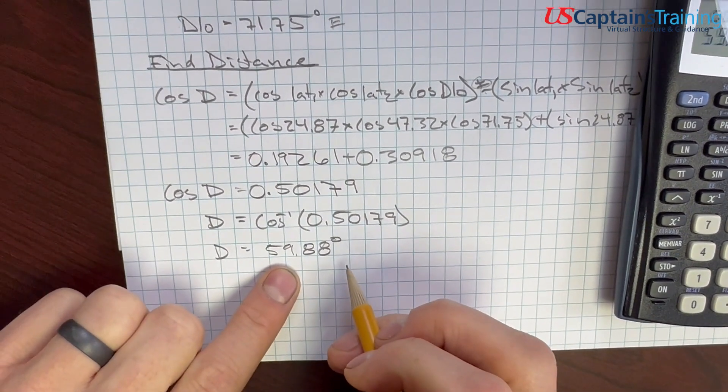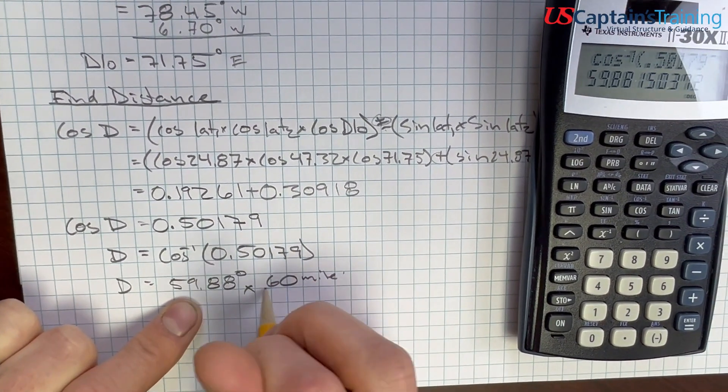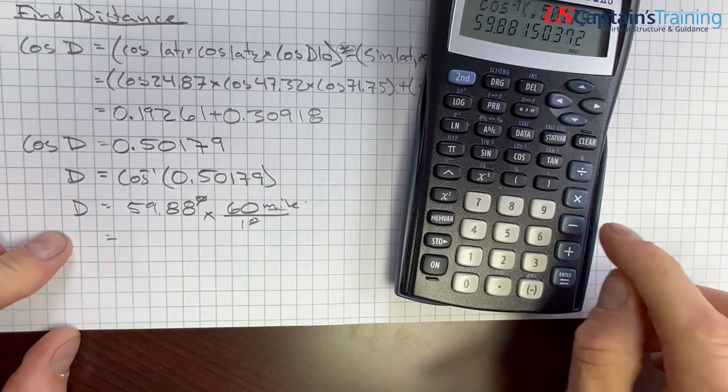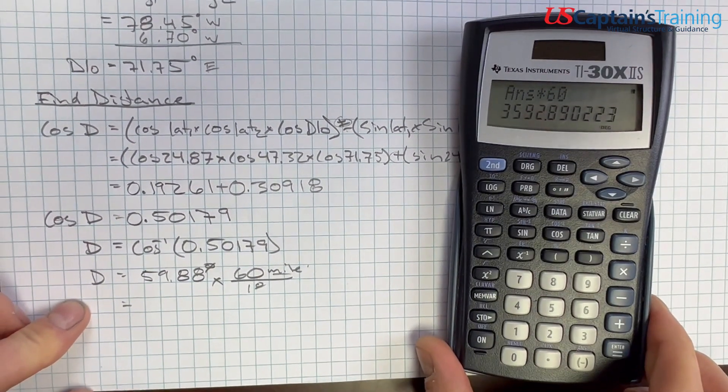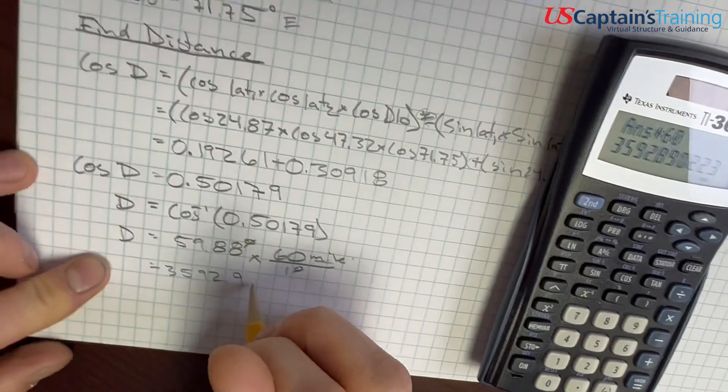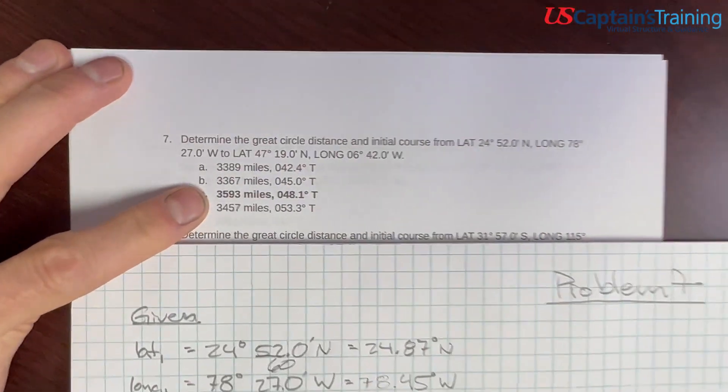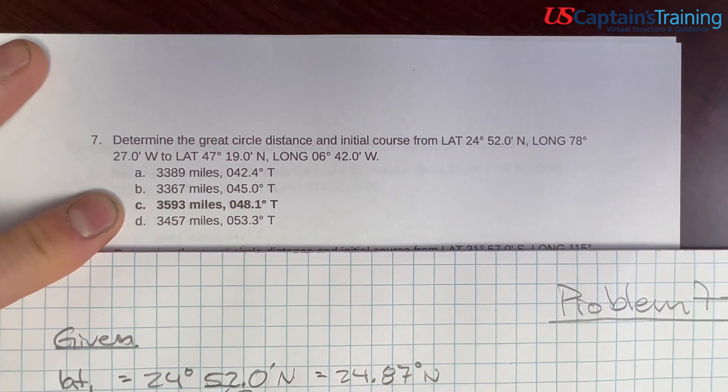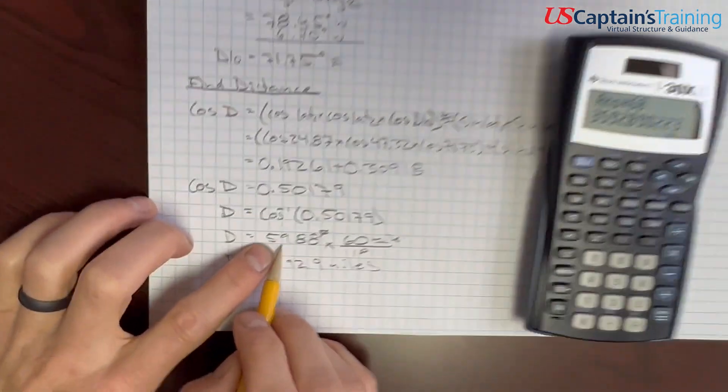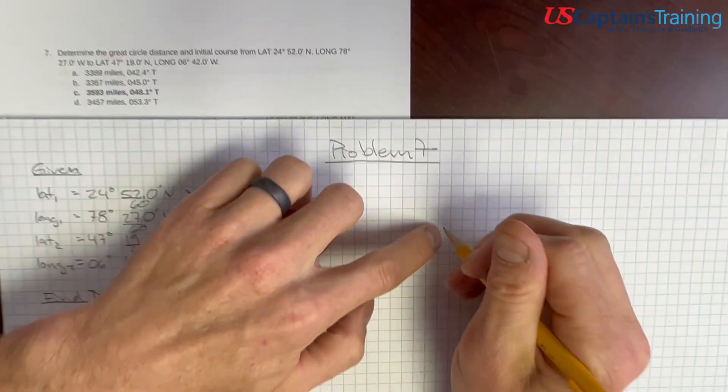Distance can be in degrees, but in the problem, it needs to be in miles. To do that, we do 60 miles over 1 degree. Now, the degrees cancel. You're left with miles. So, 59.88 times 60 equals 3592.9 miles is what we have for the distance. We nailed that. But we need to go on and solve for course. Don't mess this up because this distance here, we need to use distance in the next formula. The distance has to be in degrees.